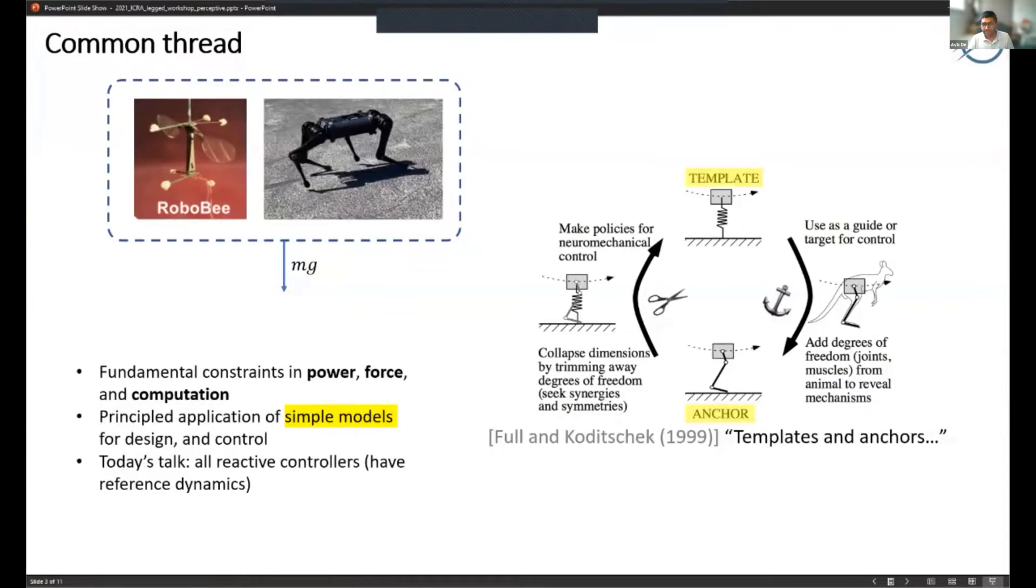They were analyzing animal locomotion and the idea was that these template dynamics are the reduced order dynamics that have become apparent after some of the control that the animals are doing.